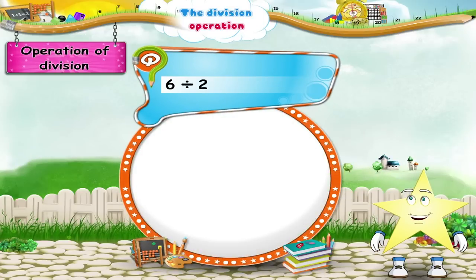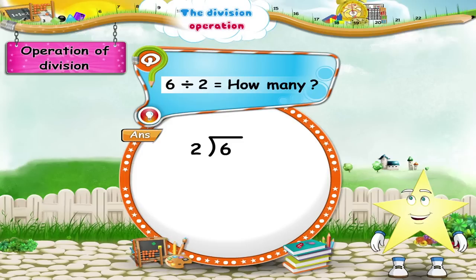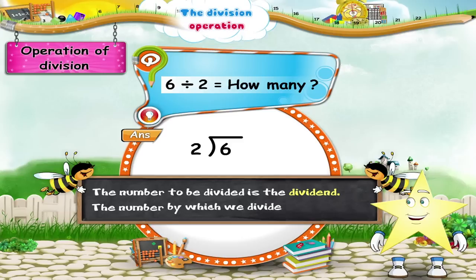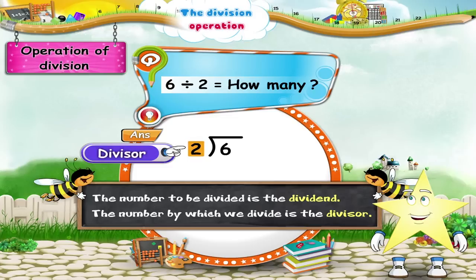6 divided by 2 equals how many? First Starry, we have to see how this is written. 6 divided by 2 is written as... Next Starry, we have to find out the Dividend and the Divisor. The number to be divided is the Dividend. The number by which we divide is the Divisor. So here, the number 6 is the Dividend, and the number 2 is the Divisor.